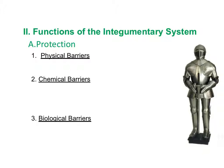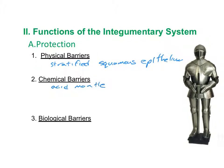In terms of protection, the integumentary system forms a physical barrier through its stratified squamous epithelium, which is the strongest and thickest of the epithelial membranes. In addition to a physical barrier, the skin also forms a chemical barrier in the form of an acid mantle. Acid is very bad for proteins, potentially causing denaturation, and so it will also kill small organisms.